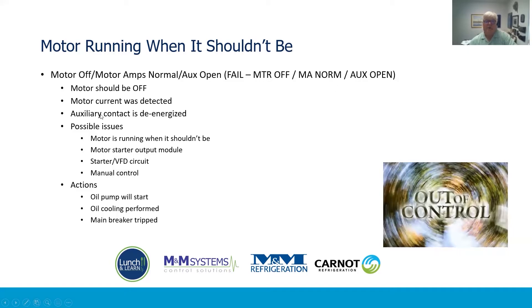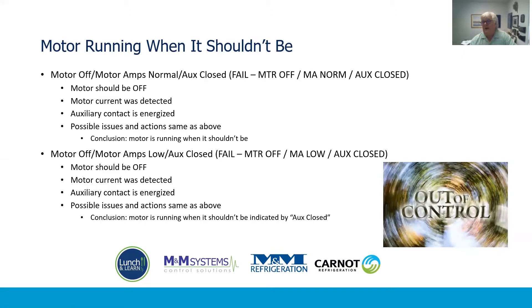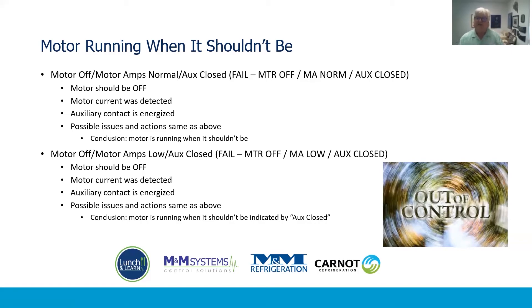If that's the case, we're going to keep oil pumps running and keep oil cooling going. But on VFD machines and ones where it's available, we're going to kick the main breaker trip, which is an attempt to not only kill the compressor but also kill the micro. The other cases are: we've tried to turn it off, the motor current is normal, and the auxiliary is closed — so it's just running. Or we've tried to turn it off, the motor current has gone down, but the auxiliary is still closed. We don't split hairs on any of this — if either one says the motor's running, it's running. So we're going to keep the oil pumps on, keep cooling going, and fire that main breaker trip to try to kill the main breaker and turn the compressor off. The reason we do all this other stuff even when the main breaker trip doesn't work is we still want to try to salvage the compressor by keeping cooling and lubrication going.